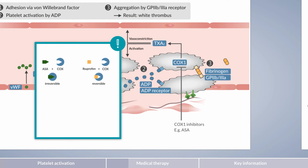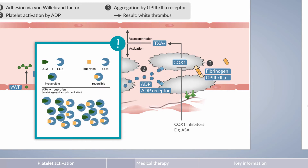Therefore, the effect on platelet aggregation depends on plasma levels and is absent after an average of 24 to 48 hours. If a patient takes both ibuprofen and aspirin, cyclooxygenase 1 is only partially reversibly inhibited by ibuprofen. The effect of this inhibition is gradually restored, resulting in a lack of inhibition of platelet aggregation. At least 95% inhibition of platelet cyclooxygenase 1 is required for a cardioprotective effect. Therefore, one current recommendation is to take aspirin 30 minutes before ibuprofen, or, if the patient has already ingested ibuprofen, aspirin should not be taken until at least after 8 hours.